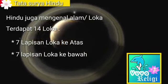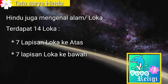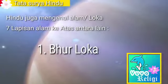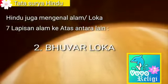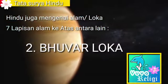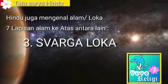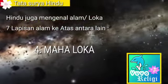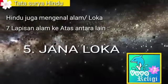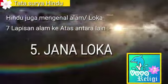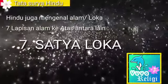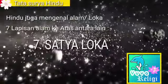Hindu juga mengenal yang namanya Loka. Terdapat 14 Loka: 7 lapisan ke atas dan 7 lapisan ke bawah. Lapisan ke atas ada 7, yaitu: pertama Bur Loka, kedua Buar Loka, ketiga Suarga Loka atau Siwa Loka, keempat Maha Loka, kelima Jana Loka, keenam Tapa Loka, dan ketujuh Satya Loka.